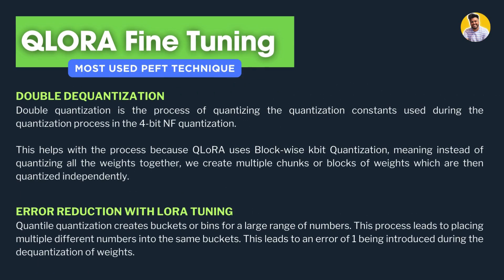The second concept is double quantization, which is the process of quantizing the quantization constant during the 4-bit NF quantization process. It can save 0.5 bits per parameter on average. This is helpful because QLoRA uses block-wise k-bit quantization, creating multiple chunks or blocks of weights which are quantized independently. Block-wise quantization leads to multiple constants being created, and those quantized values are saved in additional space — so you don't need extra storage for those large numbers, as they are further quantized.